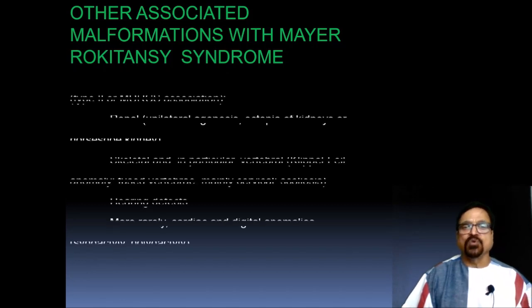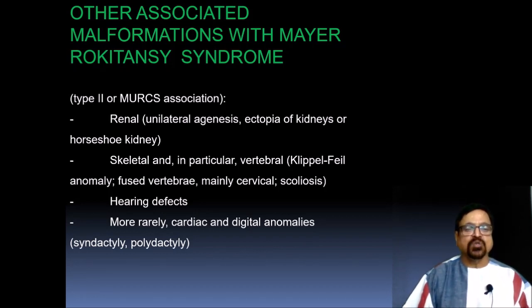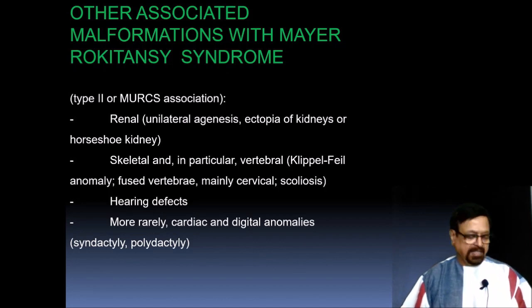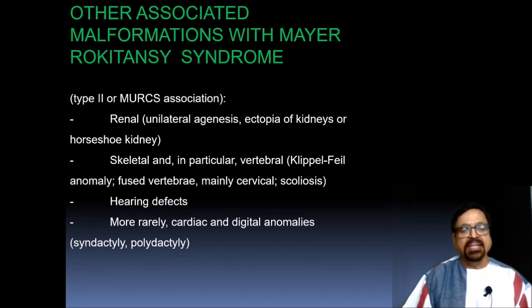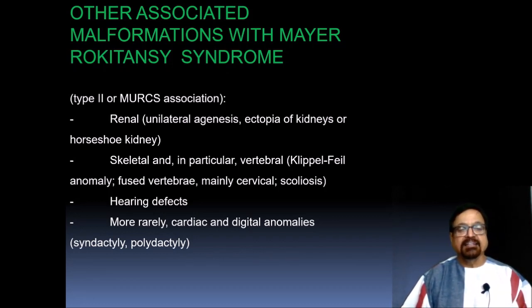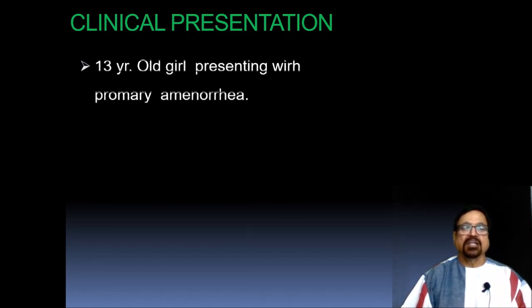Incomplete aplasia associated with other malformations is generally referred to as MURCS — a type of MRK syndrome. These are short forms used because the full terms are very lengthy. Type 2 or MURCS-associated anomalies include renal anomalies (unilateral agenesis, ectopic kidney, or horseshoe kidney), skeletal anomalies (particularly vertebral — Klippel-Feil anomaly, fused vertebrae mainly cervical, or scoliosis), hearing defects, and cardiac or digital anomalies. When detecting a patient with MRS syndrome on ultrasound, always look for these associated anomalies.